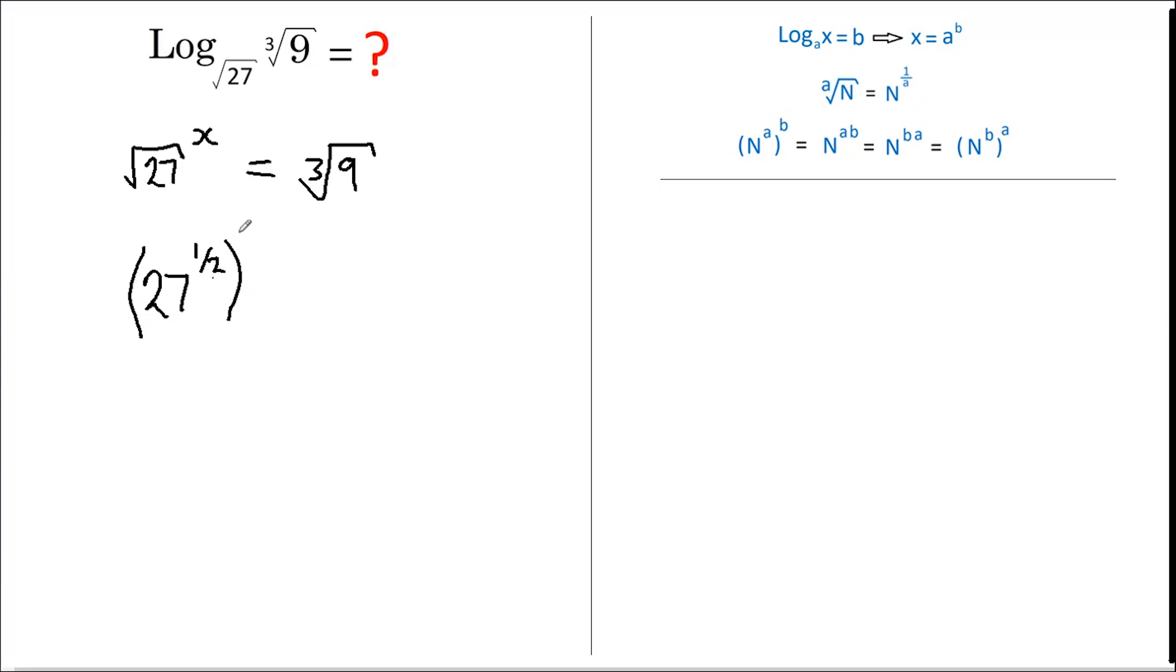And that equals 9 to the power of a third, again per this rule here. Now, where we have a number raised to a power and all of that is raised to another power, we can rewrite that number raised to the powers multiplied together.